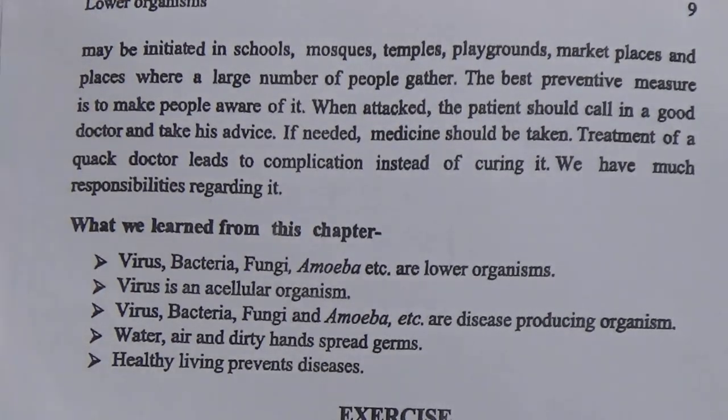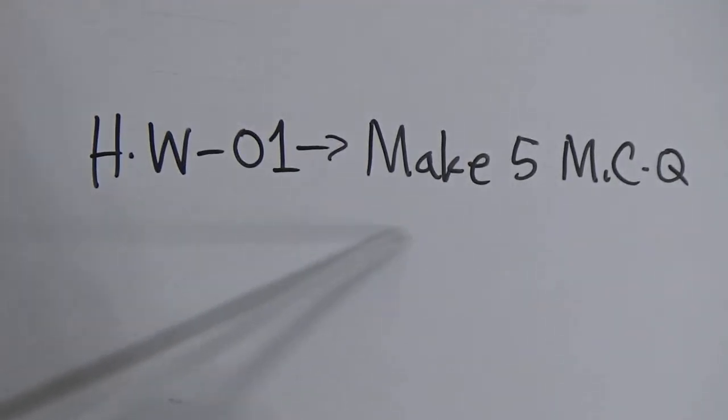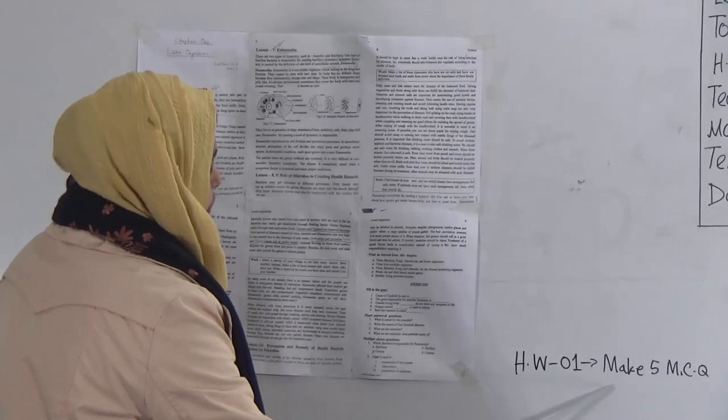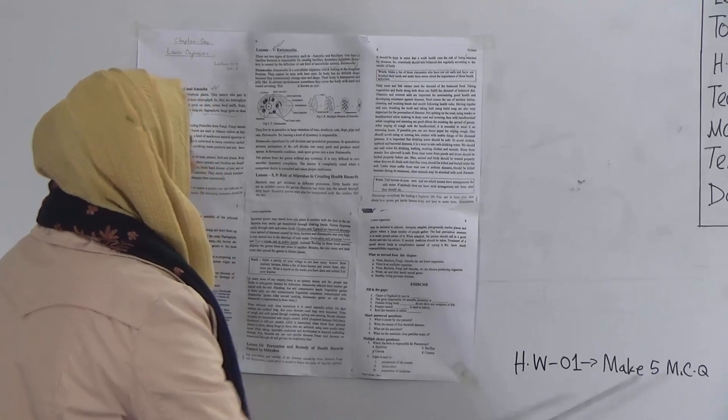I have finished today's lessons. Now I will give you SW: make 5 MCQs with 4 options each by yourself. To do this SW, you have to read Lessons 5 to 10 properly. Submit your SW every Saturday from 9 am to 3 pm. I hope you have understood today's topic. Keep practising at home and do your SW. Stay home, and we will see you again in our next class.